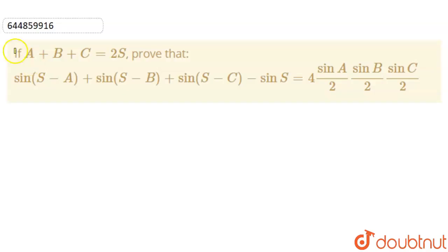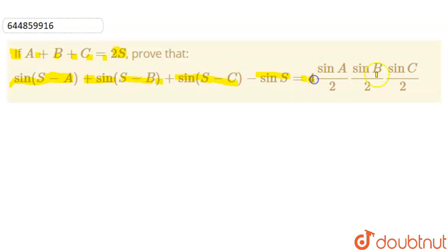Today our question is: if A plus B plus C is equal to 2S, then prove that sin(S minus A) plus sin(S minus B) plus sin(S minus C) minus sin S is equal to the given expression. To solve this question, we will consider the left hand side first.